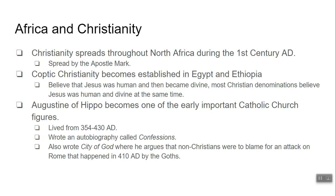Africa is also a key element in the spread of Christianity. During the first century AD, the Apostle Mark goes to North Africa, Ethiopia, and Egypt and spreads Christianity. A denomination called Coptic Christianity forms there. The biggest difference between Coptic Christianity and mainstream Christianity is that Coptic Christians believe Jesus was human, then died, and then became divine — whereas most Christian denominations believe Jesus was human and divine at the same time, performing miracles while alive.